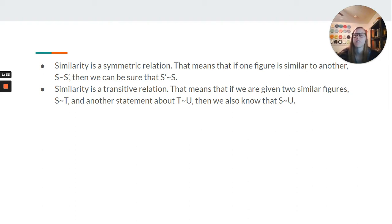Similarity is a transitive relation. That means that if we are given two similar figures, S is similar to T and T is similar to U, then S must be similar to U.